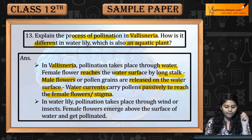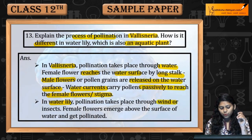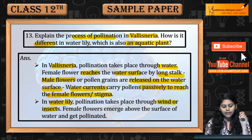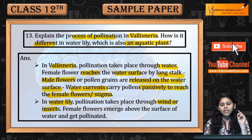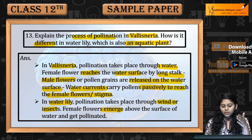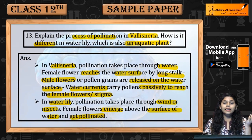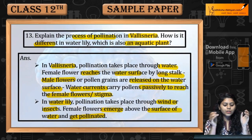Then fertilization takes place. In the case of water lily, pollination takes place through wind or insects. The female flowers emerge above the surface of the water and then get pollinated.